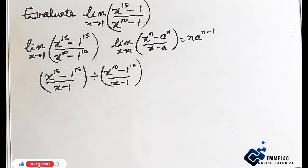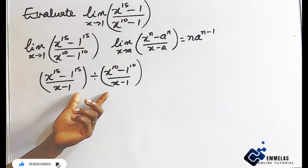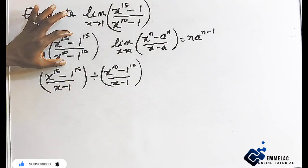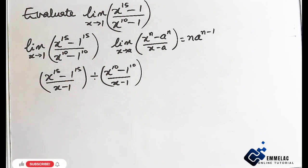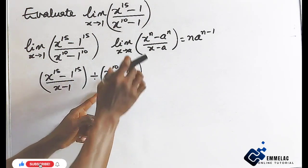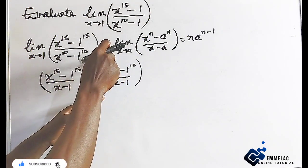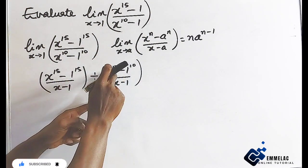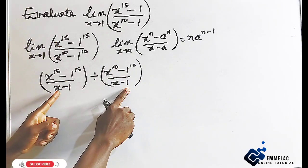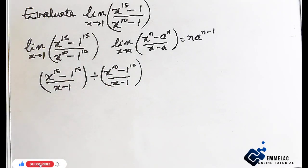If we tend to resolve the function in the denominator, it will still give you the function on top, because when we flip this side of the function over, x minus 1 will become the numerator, and x raised to the power of 10 minus 1 raised to the power of 10 will become the denominator, and x minus 1 cancels out x minus 1.